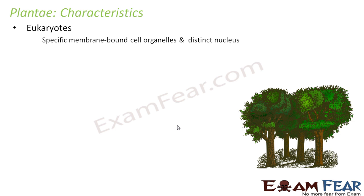For example, in the case of the Monera kingdom where we talked about bacteria, they were all prokaryotes because there are no distinct cell organelles present inside the cell. When I say cell organelles, I am talking about the different organelles present inside a cell like mitochondria, Golgi apparatus, ribosomes, and so on. For eukaryotes, we have distinct organelles, each with its own membrane, and a distinct nucleus is also present.